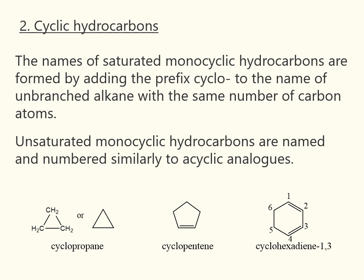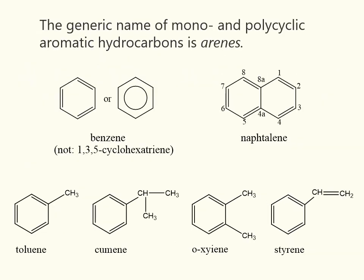Unsaturated monocyclic hydrocarbons are named and numbered similarly to acyclic analogs. The generic name of mono- and polycyclic aromatic hydrocarbons is arenes. The simplest representatives are called benzene and naphthalene.